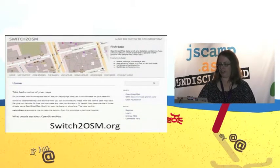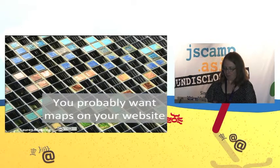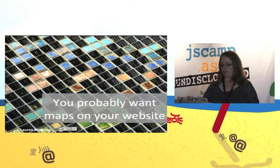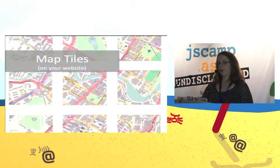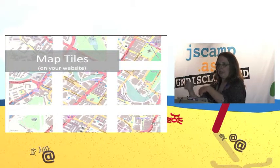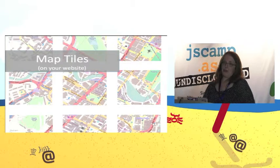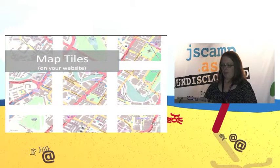Let's actually get some maps on your website. The first concept is probably map tiles — just a collection of images. When you use something like Bing Maps or Google Maps and drag around and the images load so you can keep following the map, those are map tiles. They can be styled in a bunch of different ways, but it's a fairly standard thing.